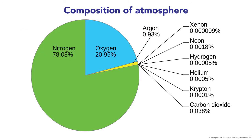The composition of the atmosphere includes nitrogen at 78.08 percent, oxygen at 20.95 percent, argon at 0.93 percent, and trace amounts of xenon, neon, hydrogen, helium, krypton, and carbon dioxide as shown in the slide.